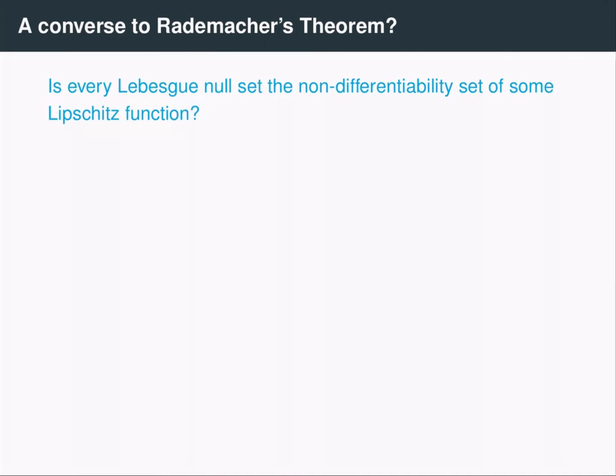So a very natural question in this context that has garnered a lot of attention is whether there's a converse to Rademacher's theorem. So that is, given a Lebesgue measure zero set, is there a Lipschitz function that is nowhere differentiable along the measure zero set?